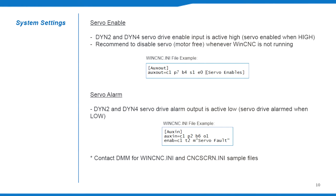The servo enable output controls when the servo drive should be active and in control of the motor position. The DYN servo drive's enable inputs are active high. Set the following in the WinCNC configuration file to disable the drives whenever the program is closed.